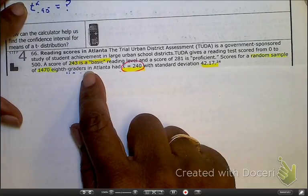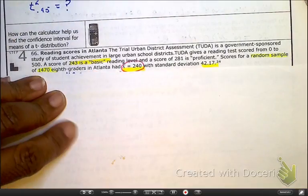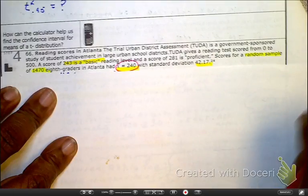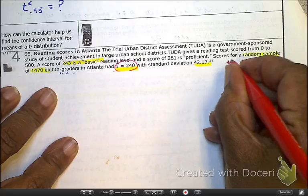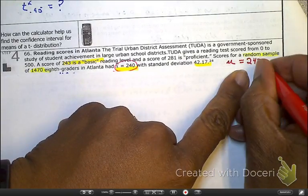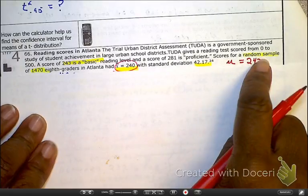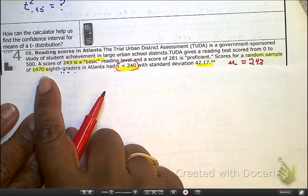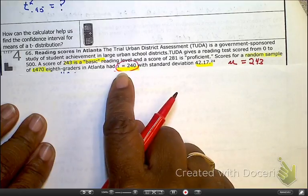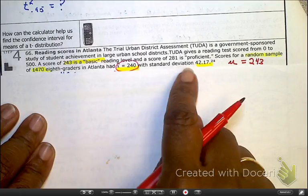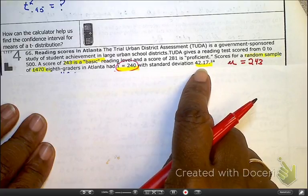And highlight the important information. The basic score is 243, so yes, you know that that is your mean of the population. We have random sample of 1,470. We have a mean of that particular group to be 240. And the standard deviation to be 42.17.